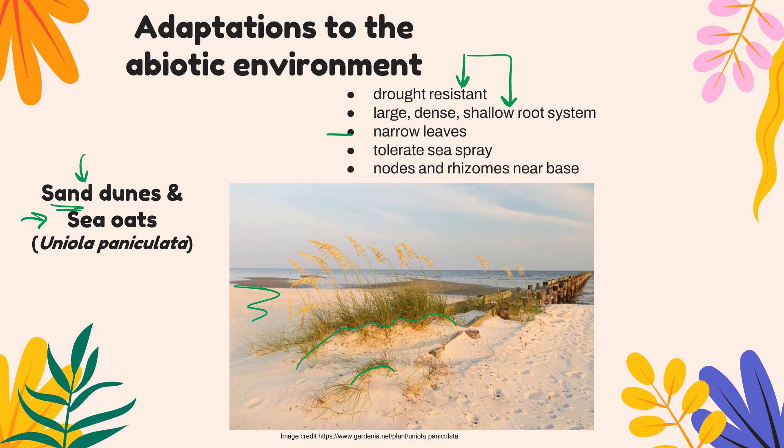These plants also have very narrow leaves, which prevents water loss, and they can tolerate sea spray, which contains salt. They have nodes and rhizomes near the base that, when the plant gets covered by sand due to tides or wind, stimulate growth of shoots just above the sand — this asexual reproduction allows the plant to survive even as sand gets deeper. There is also a sexual reproduction cycle, producing seeds similar to an oat plant, which is why we call it the sea oat.